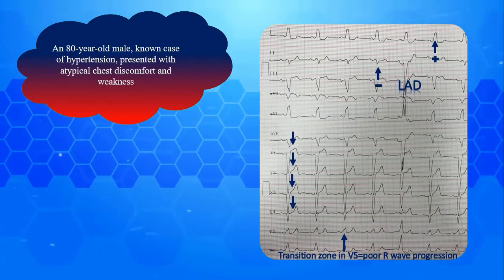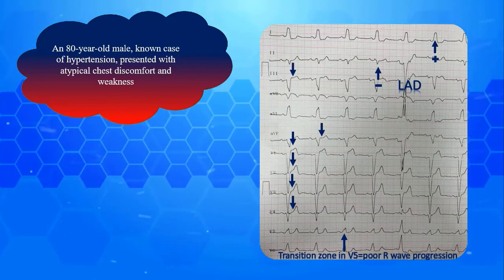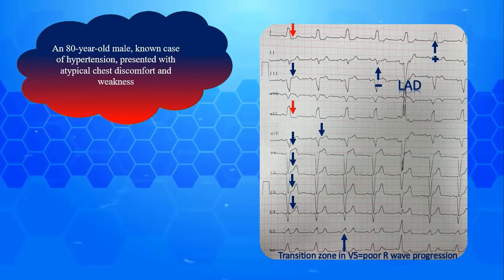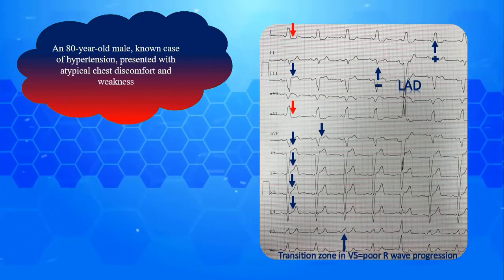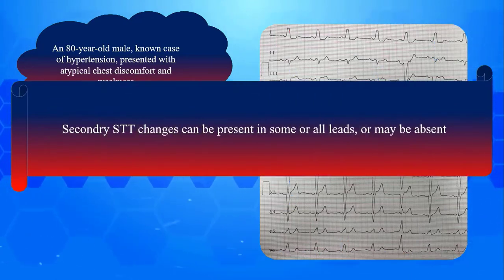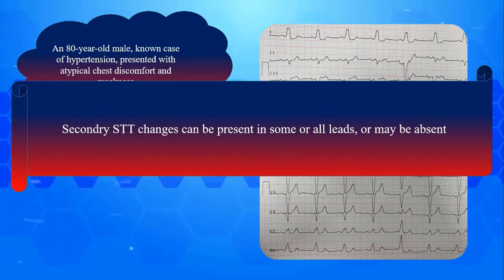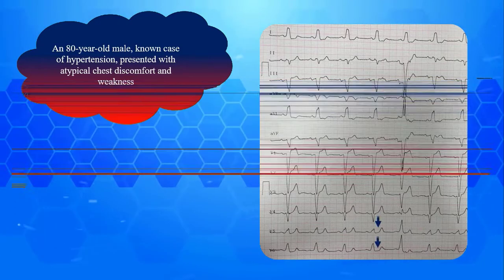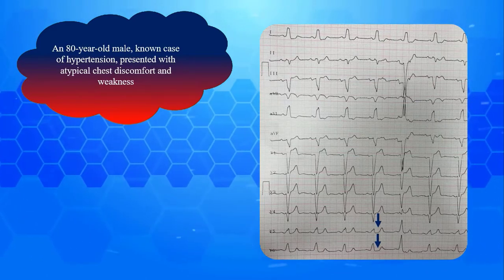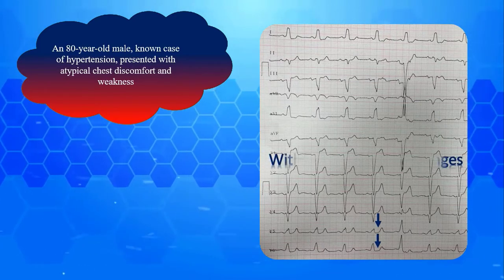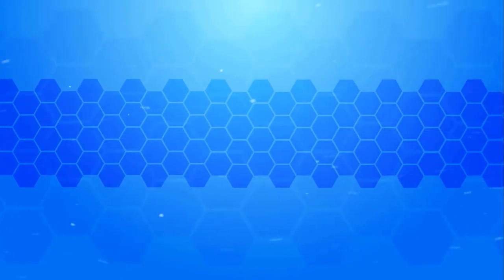There are ST elevations with upright T waves secondary to deep S waves in V1 to V4, D3, and AVF, while there are ST depressions secondary to slurred R wave in D1 and AVL. Therefore the STT changes in this tracing are discordant and considered normal. Recall that secondary STT wave changes in bundle branch blocks are not obligatory — they can be present in some or all leads or may be absent. In spite of tall and slurred R in V5 and V6, no significant ST depression or T wave inversion is present. In summary, this is a typical LBBB with secondary STT wave changes.